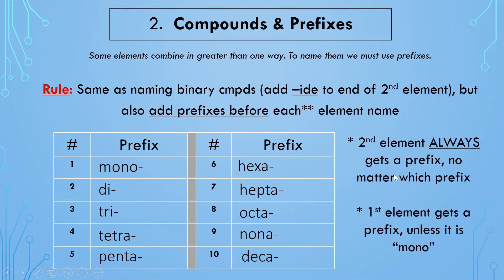There are some slight cautions to be aware of. The second element, no matter what the subscript is, always gets a prefix — whichever one is appropriate based on the subscript. The first element gets a prefix unless it's mono. So for subscripts two through ten on the first element, you add a prefix, but we don't use mono on the first element — it's just not proper.